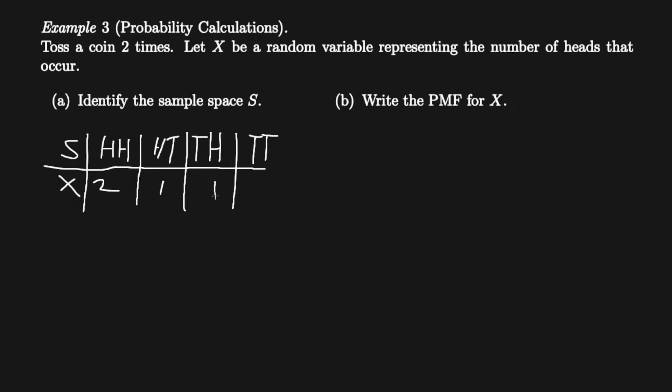Now getting number of heads, so heads heads is obviously two, heads tails one, tails head is one, and tails tails zero because you get zero heads.